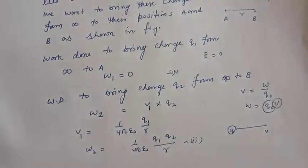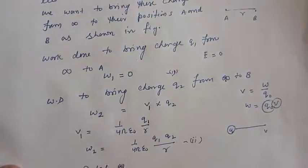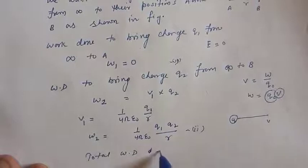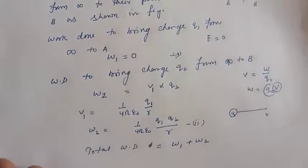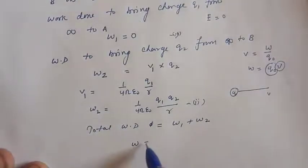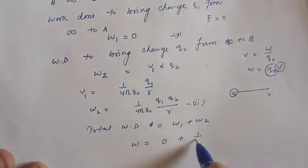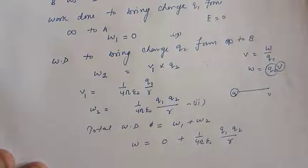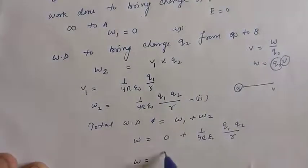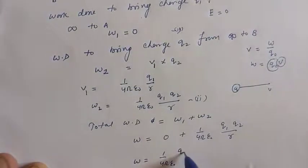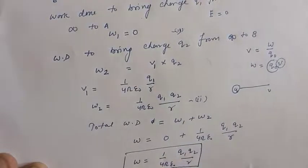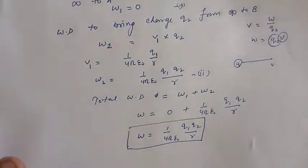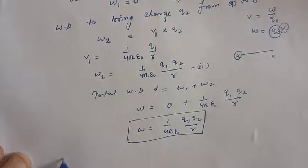So now total work done. Total work done to bring the charges from infinity to their respective positions is the sum of work done w1 plus w2. So put both the values: w1 is 0, w2 is 1 upon 4 pi epsilon 0 q1 q2 upon r. So net work done is 1 upon 4 pi epsilon 0 q1 q2 upon r.